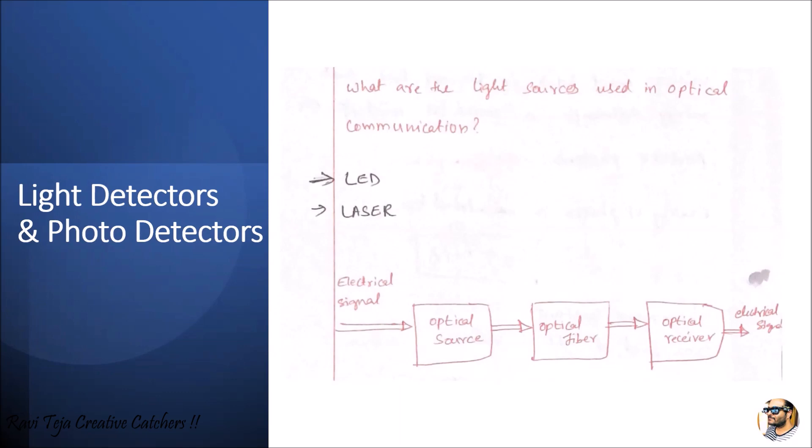Coming to the basic block diagram, we can see an optical source, an optical fiber, and connected to an optical receiver. The optical source is the light source where LED or laser is connected. It takes the electrical signal as input and converts it into light energy. This light energy with integrated data is passed through the optical fiber cable and the optical receiver receives the data.